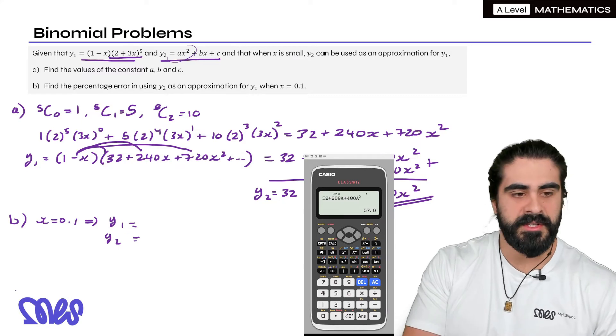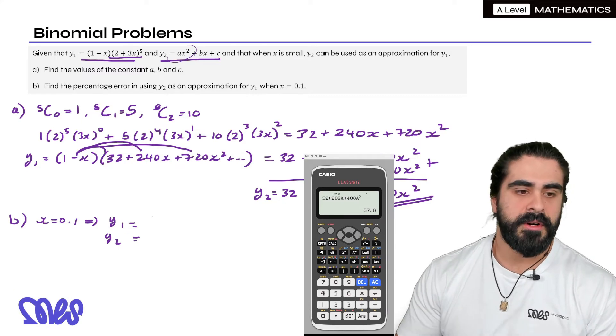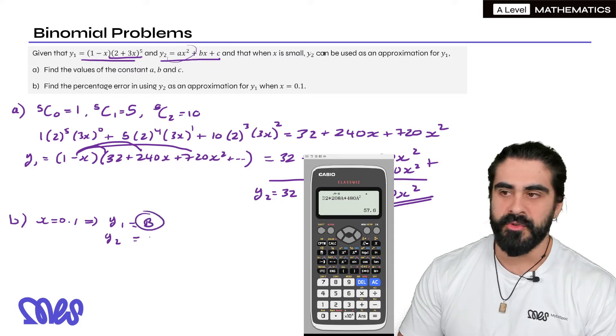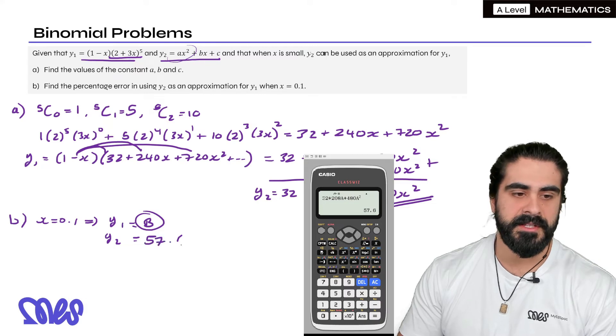So the y1 which we subbed in, I'm just going to write down here that we stored it as b just for memory. I stored that as b. But y2 when we subbed into the quadratic was 57.6.